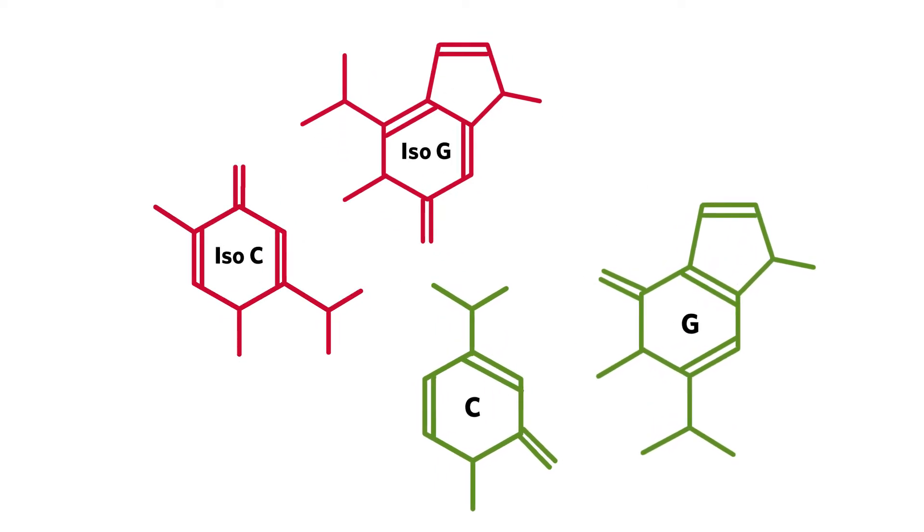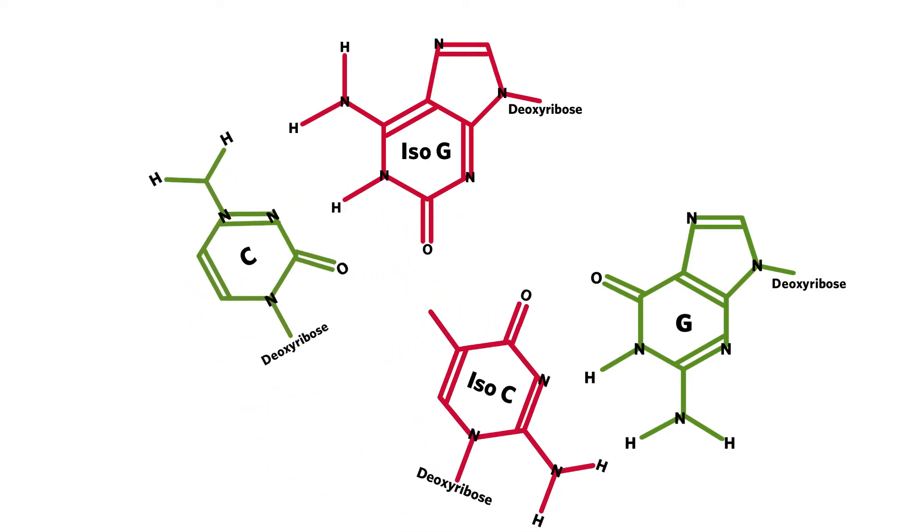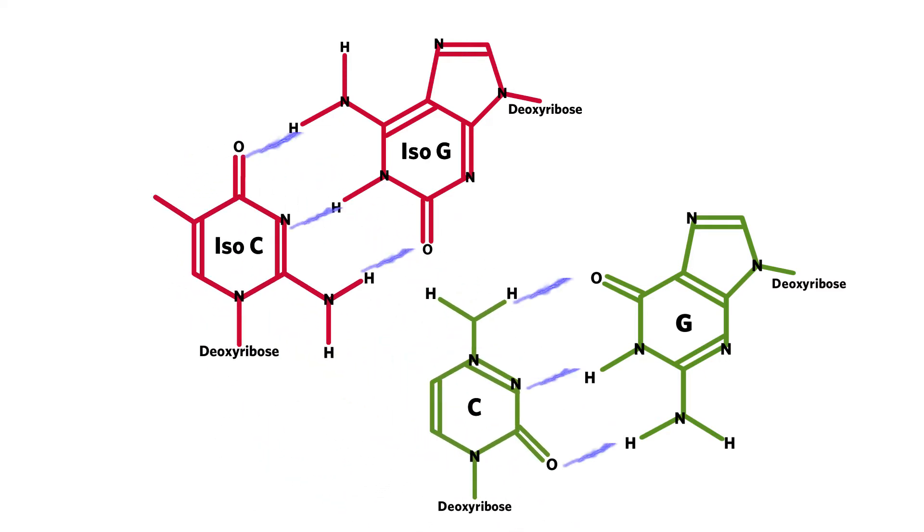This is a standard base pair. This is the bonding pattern for the pair. When the carbonyl group and amine groups are switched, as they are in iso-base pairs, the bonding pattern changes. This means iso-C and iso-G can only hydrogen bond with each other and cannot hydrogen bond with naturally occurring C and G.